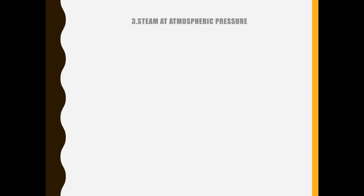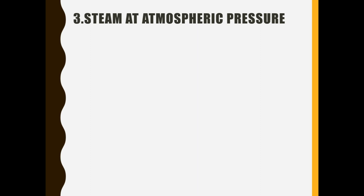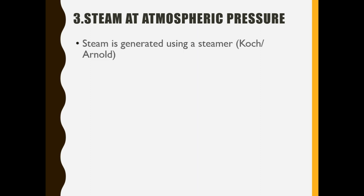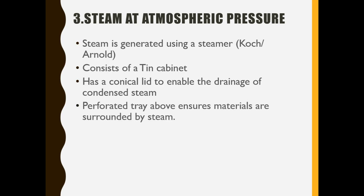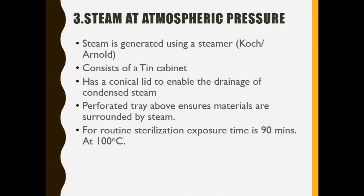Coming to the first one, that is steam at atmospheric pressure. Under this, the steam is generated using the steamer. Generally, we are using the Koch steam sterilizer or Arnold steam sterilizer. This instrument mainly consists of a tin cabinet. It has a conical lid to enable the drainage of the condensed steam. It also has an inverted tray above that ensures the material is surrounded by steam. For routine sterilization purpose, the exposure time is 90 minutes at 100 degree centigrade.